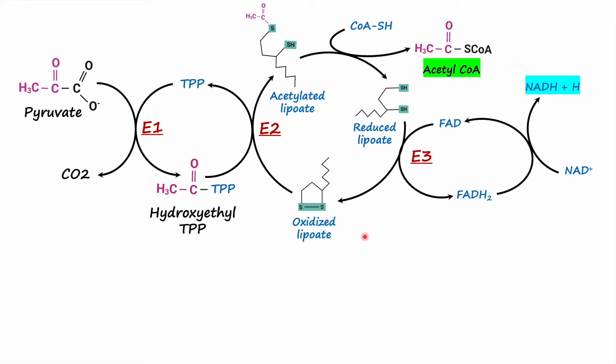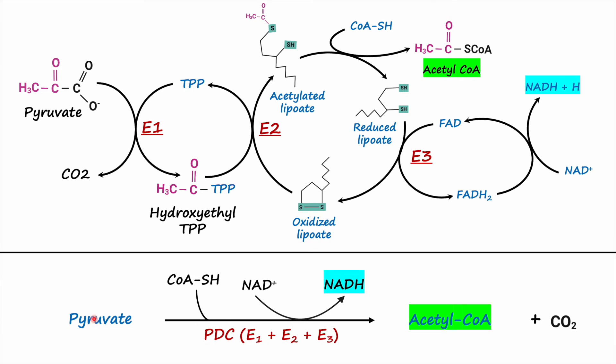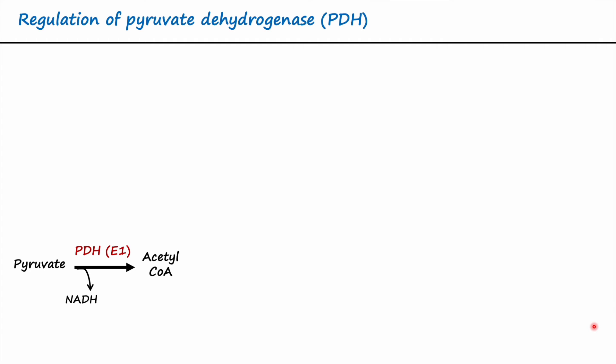This schematic is the kind you will find in most textbooks, which can be confusing — that is why I presented the reaction in five different steps to make it easier to understand. Overall, oxidative decarboxylation of pyruvate synthesizes acetyl coenzyme A and carbon dioxide, generates NADH, and is carried out by pyruvate dehydrogenase complex — three enzymes E1, E2, E3 — along with their five different coenzymes.